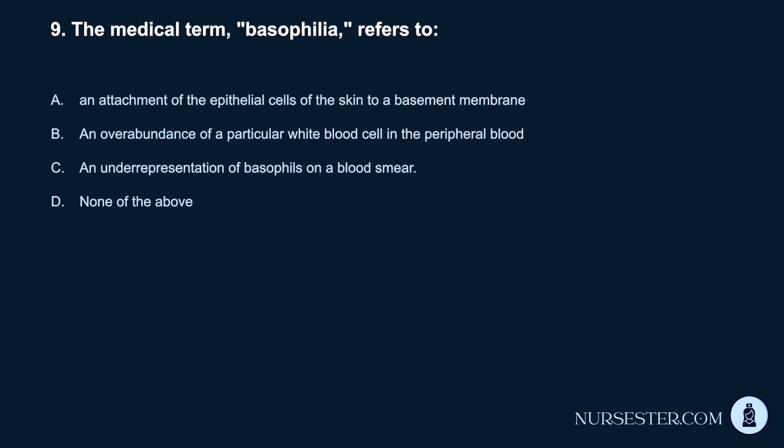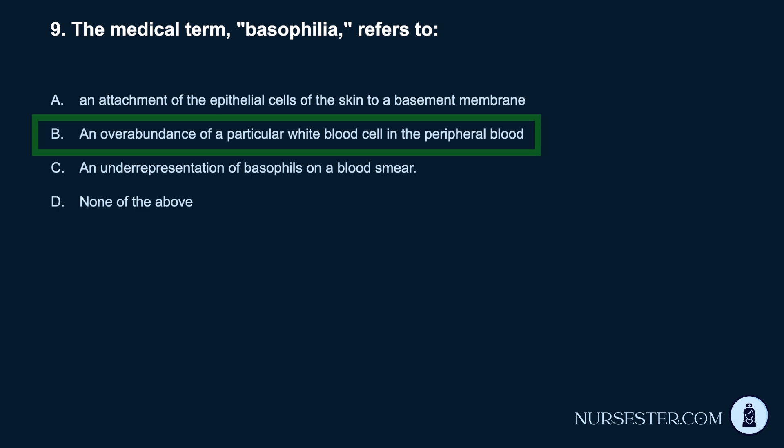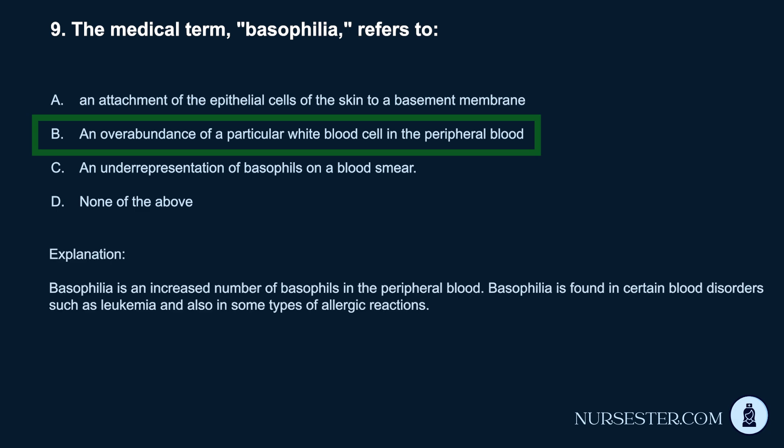Question 9. The medical term 'basophilia' refers to: a. An attachment of the epithelial cells of the skin to a basement membrane. b. An overabundance of a particular white blood cell in the peripheral blood. c. An underrepresentation of basophils on a blood smear. d. None of the above. Correct answer: b. An overabundance of a particular white blood cell in the peripheral blood. Basophilia is an increased number of basophils in the peripheral blood, found in certain blood disorders such as leukemia and also in some types of allergic reactions.